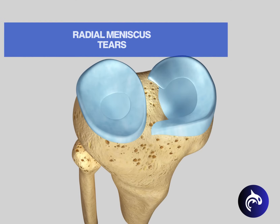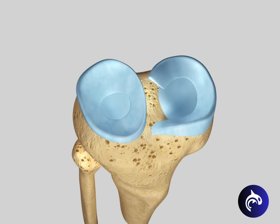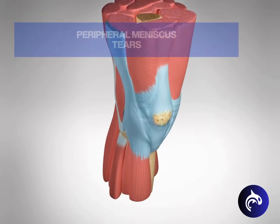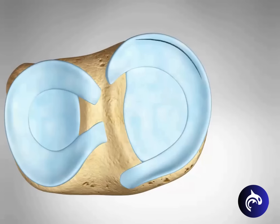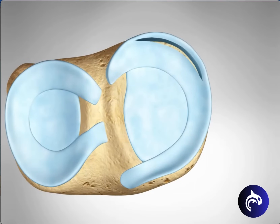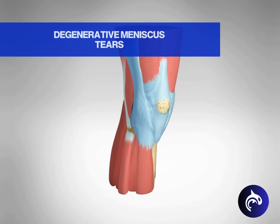Radial tears originate from the center of the meniscus and extend outwards, affecting shock absorption. As these occur in the area with poor blood supply, they have little chance of healing on their own. Peripheral tears are located on the outside of the meniscus. These tears often respond better to treatment and repair due to better blood flow or vascularization.